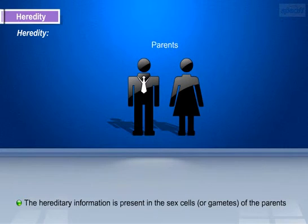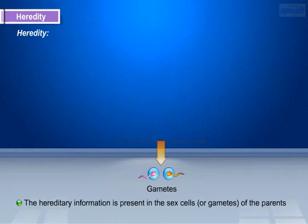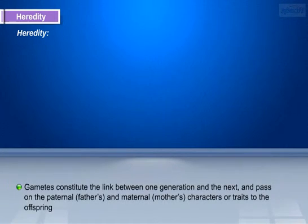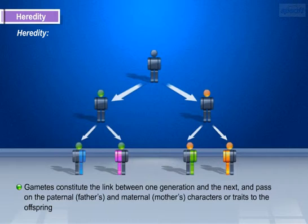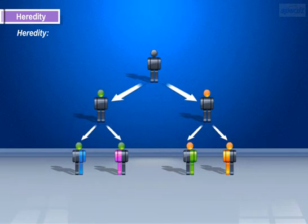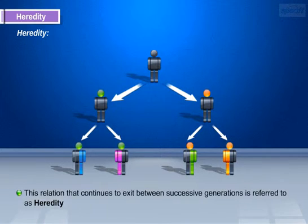The hereditary information is present in the sex cells or gametes of the parents. Hence, gametes constitute the link between one generation and the next, and pass on the paternal (father's) and maternal (mother's) characters or traits to the offspring. This relation that continues to exist between successive generations is referred to as heredity.